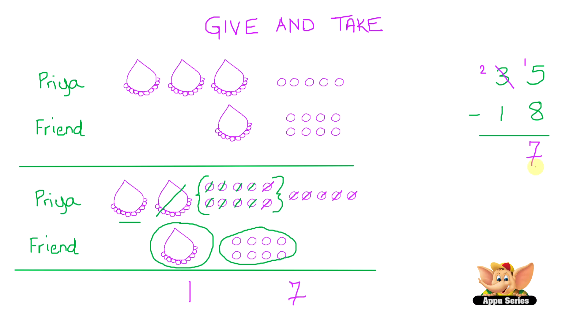And the number here we got was 7. And now with 2 necklaces, you've minused 1 necklace. Which leaves you with 1 necklace. And the answer here is 17. 17 pearls is what Priya is left with.